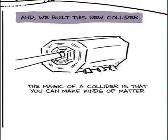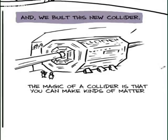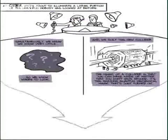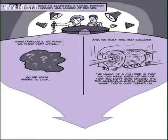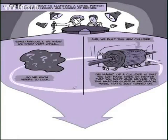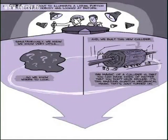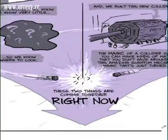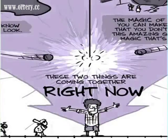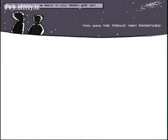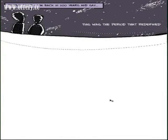And we've built these huge new tools. We have this collider. And the magic of a collider is you can make kinds of matter in a collider that you don't have around. It's this amazing quantum mechanical magic that's just turned on that's going to help us answer these questions. These two things are coming together right now. I mean, people could look back in 200 years at these years and think, well, this was the period that redefined our understanding of the universe.